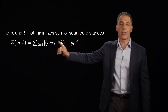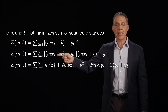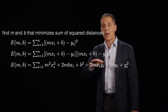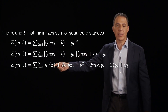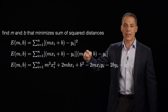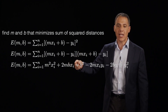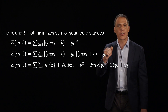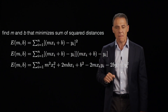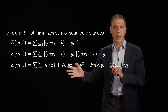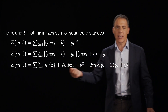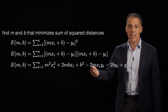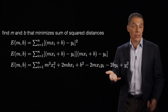Let's expand it out. I've got (mx_i + b - y)(mx_i + b - y). Doing all the cross terms: there's an m² x_i² term, a 2mb·x_i term, and so on out to y_i squared. Always important when doing this is to keep track of what's what. The x_i's and y_i's indexed on the summation are your data points, 1 to n. And m and b are your unknowns — that's what we're solving for.